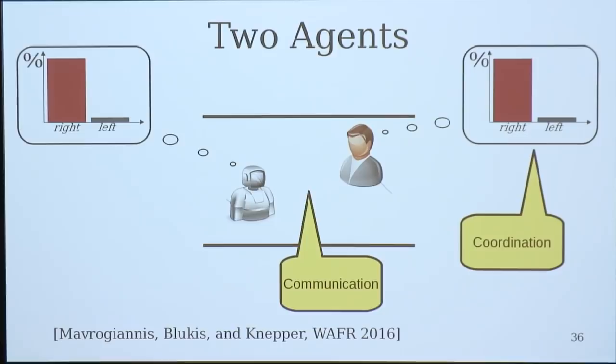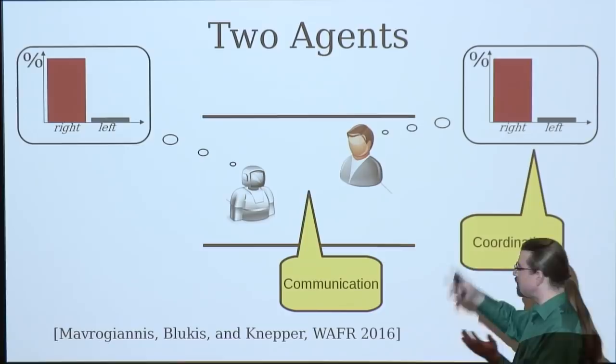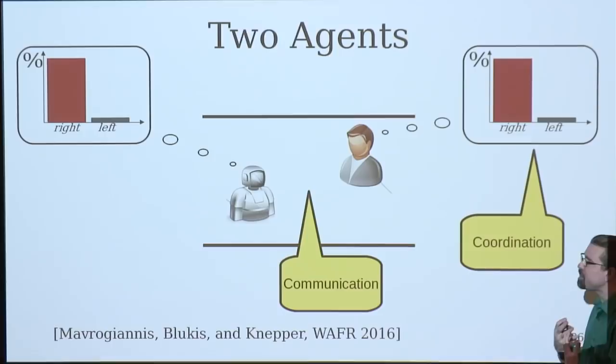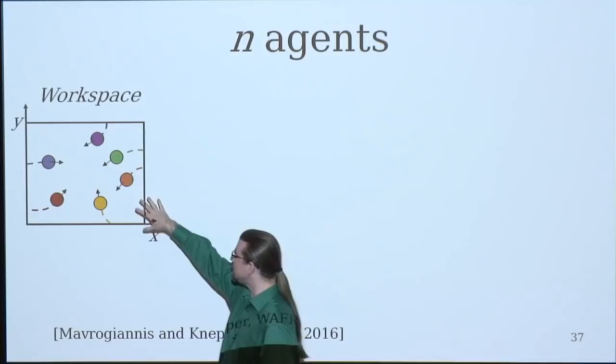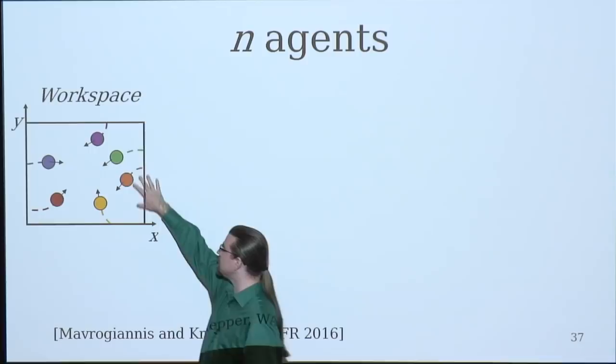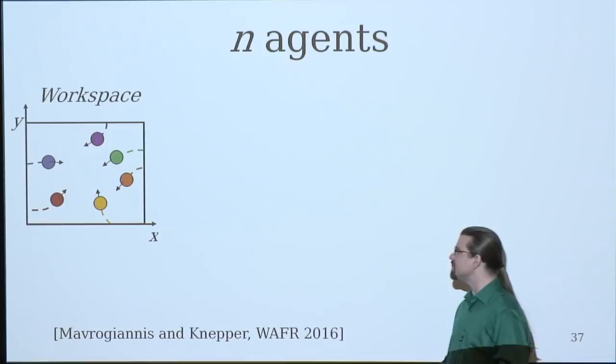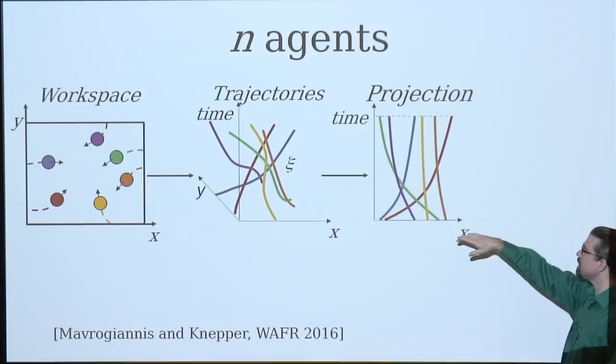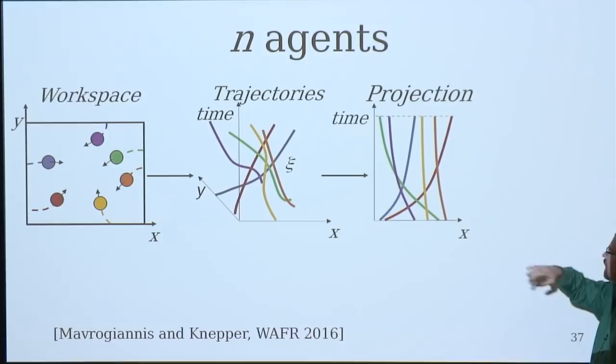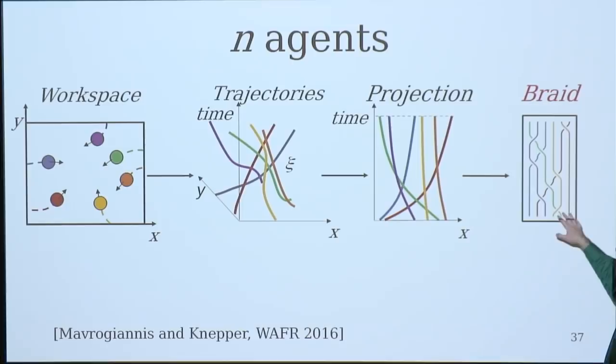But the human capability for this certainly is not limited to two people. So we've developed a way of modeling n-agents, a representation that can scale nicely to n-agents. So here, we assume there's some workspace, there's some path history that's been observed for all of the agents in the scene, and you'd like to predict what's going to happen and reason about that. So we'll plot these trajectories of the agents in space-time, and then we're going to project onto the x-time plane. So we're going to get rid of that y-axis, but we're going to preserve the passings. So who passes in front of whom? If we clean that up a little bit, it becomes what's called a braid in topology. So the braid group would be the set of all possible passings of n-strings. That has an algebra. It forms an algebraic group, and it has this nice symbolic structure to it.